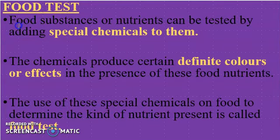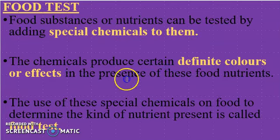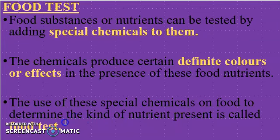Food tests — food substances or nutrients can be tested by adding special chemicals to them. The chemicals produce certain definite colors or effects in the presence of these food nutrients. The use of these special chemicals on food to determine the kind of nutrients present is called the food test. Food tests help you to know what kind of nutrients are in the particular food you are consuming.